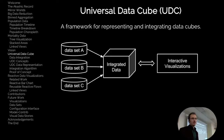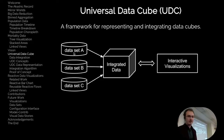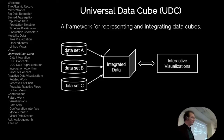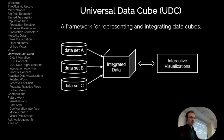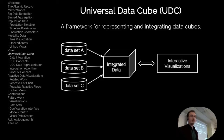The Universal Data Cube is a framework where you can import all datasets into a coherent model and integrate them together. Different datasets published independently, using different identifiers or scales, can all be integrated into a coherent structure and visualized using interactive visualizations with linked views.